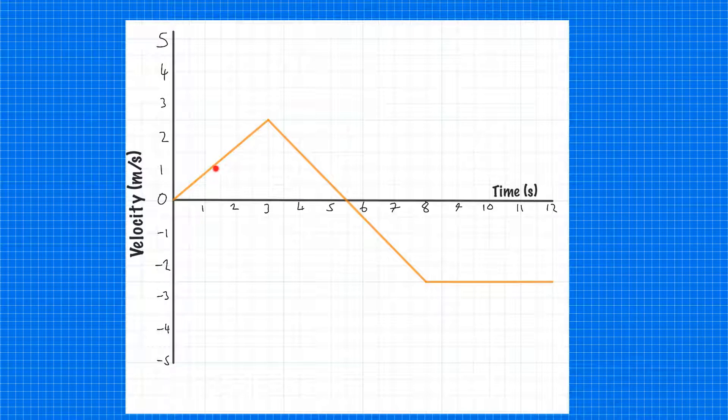In this first section, we can see an object accelerating at a constant rate until it reaches 2.5 metres per second, and that takes 3 seconds. At that point, it immediately starts to decelerate.